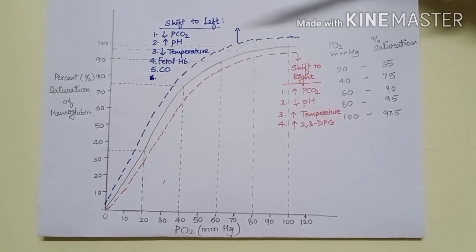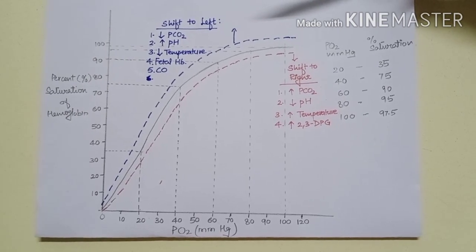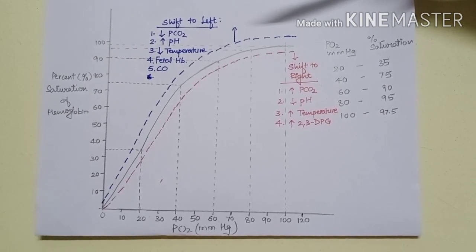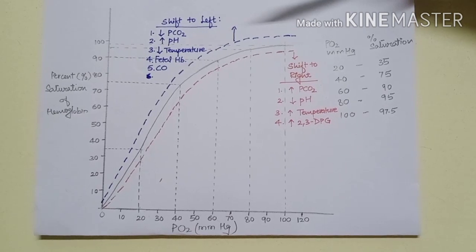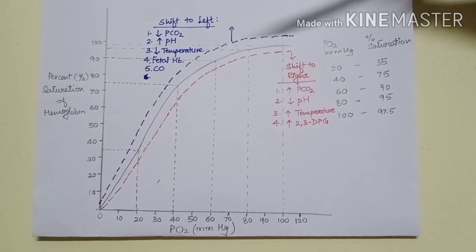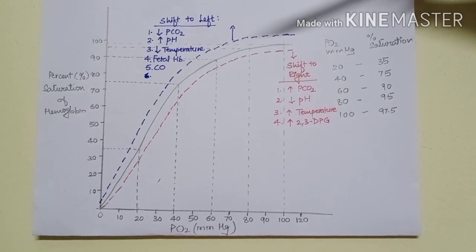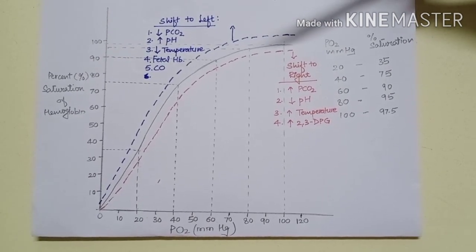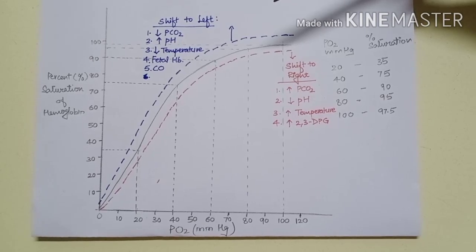Myoglobin is an iron-containing pigment present in muscle, mainly muscles of legs and heart. For myoglobin, the curve is rectangular hyperbola, not sigmoid shaped like hemoglobin. Myoglobin does not show Bohr's effect.